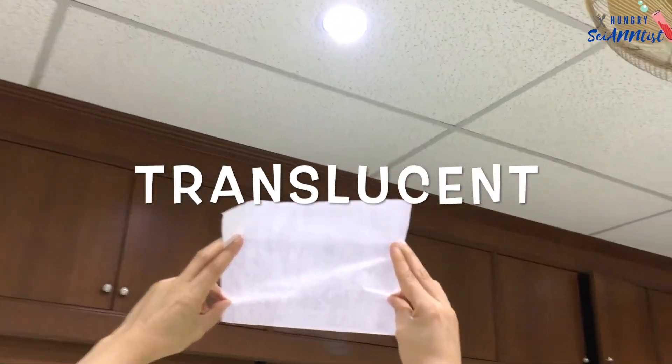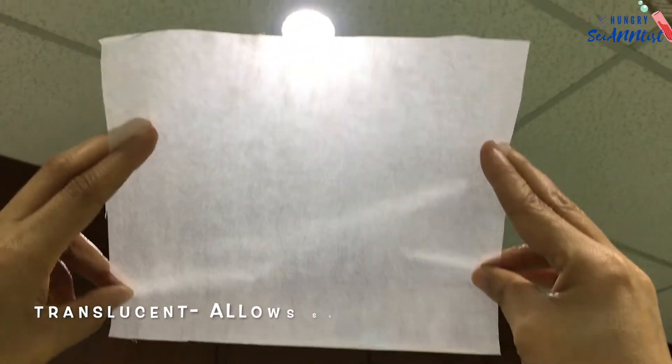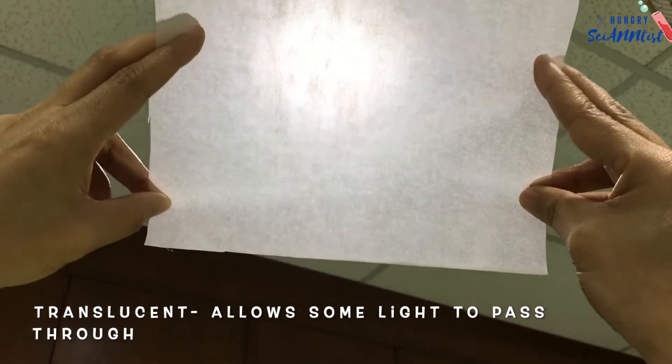An object that allows some light to pass through is called translucent, like wax paper.